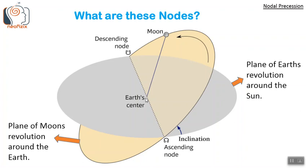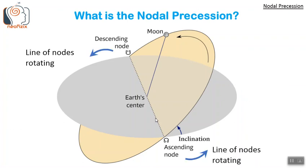The line connecting the two nodes is called the line of nodes. This is applicable not just for the moon but for any artificial satellite or any two-body system in general. During a nodal precession, the line of nodes is rotating in the bluish-gray plane. The moon keeps orbiting in its orange plane, but the orange plane itself is rotating, and the ascending and the descending nodes go around in a circular path in the gray plane.